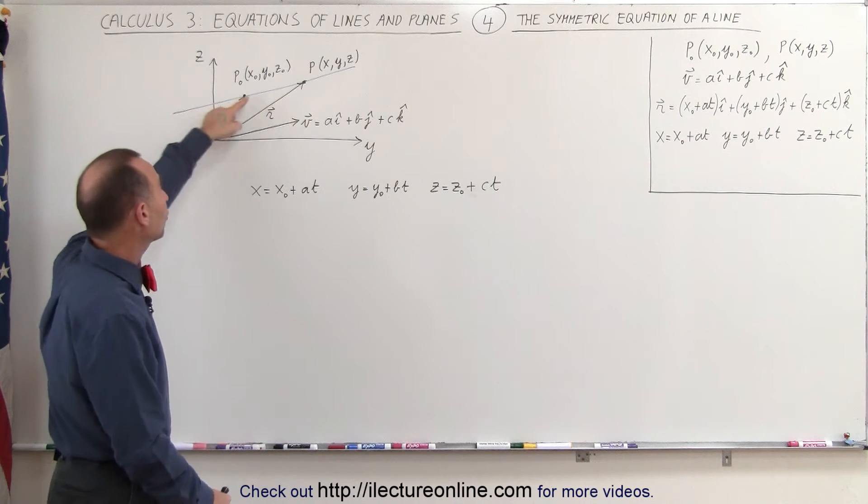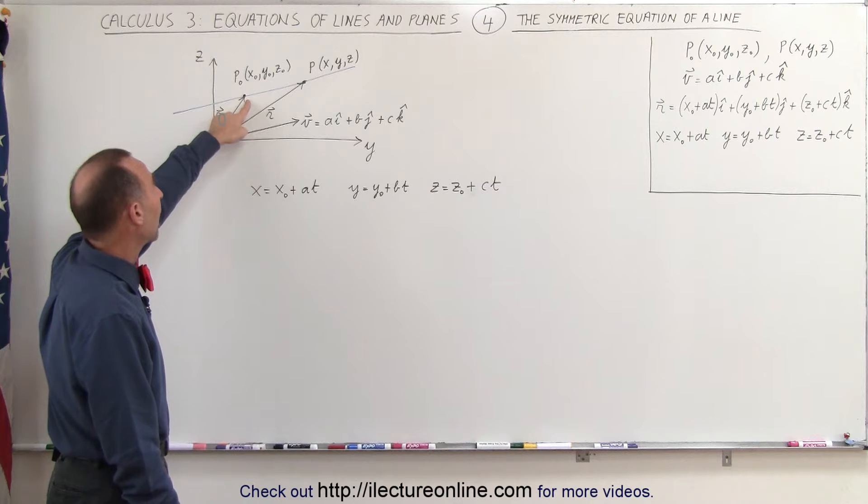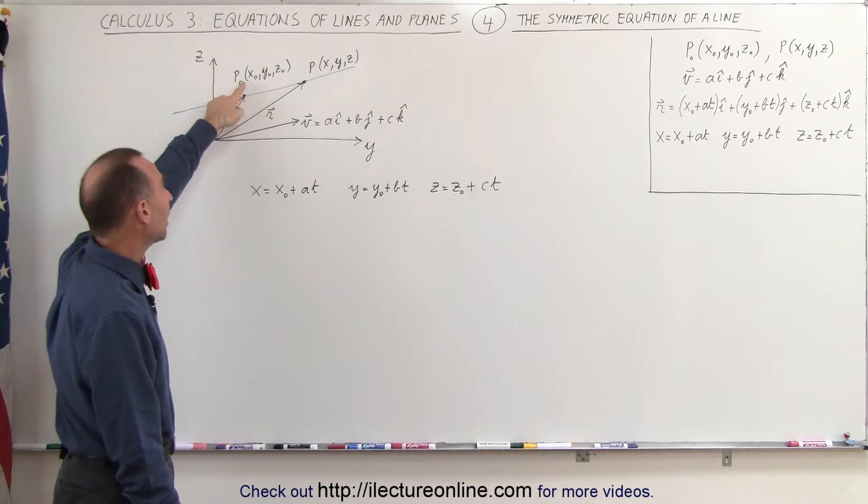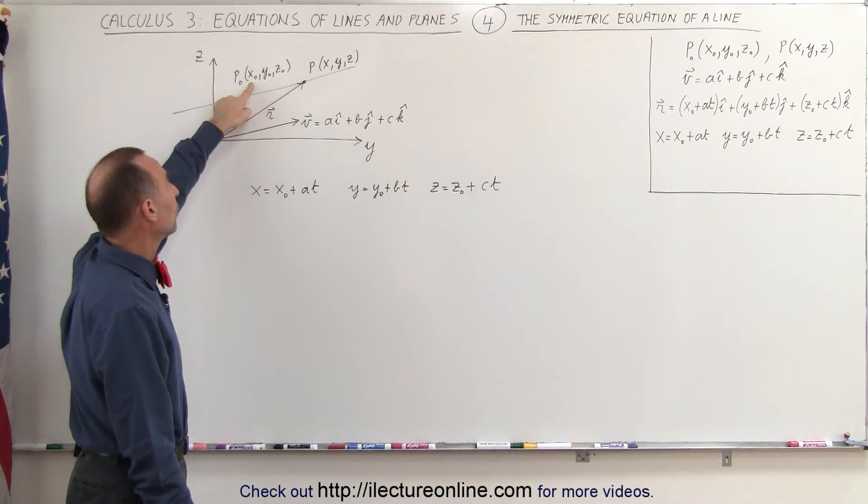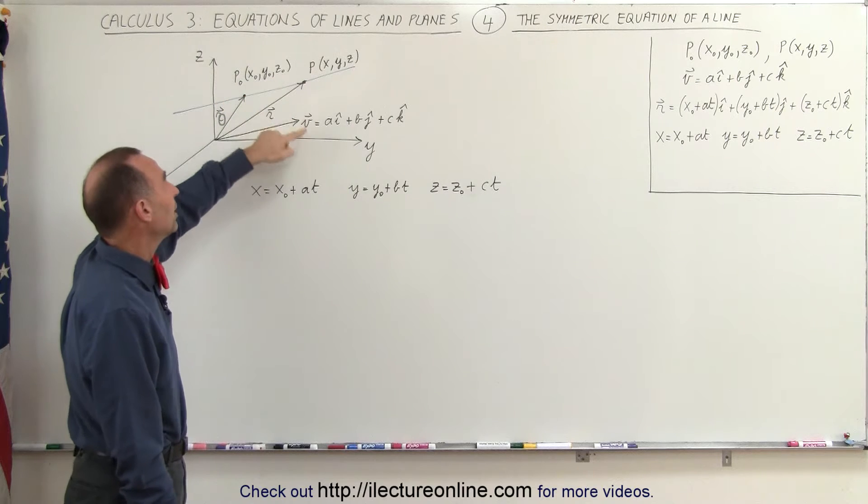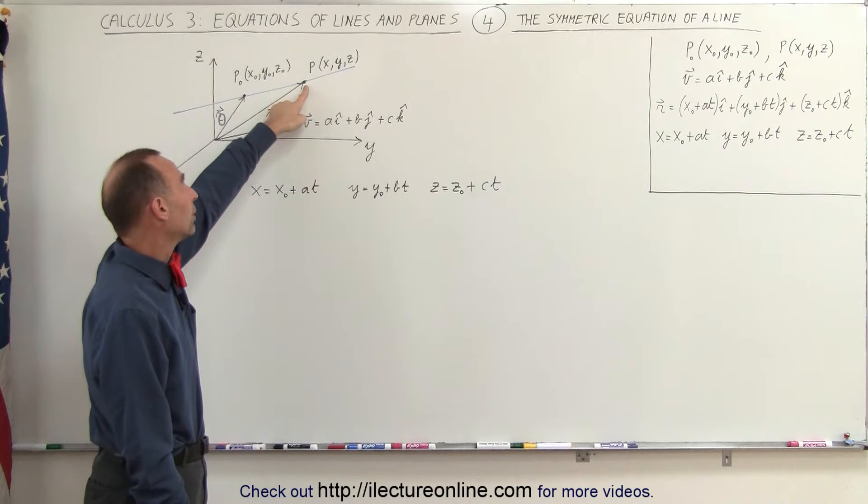Again we have a line in space, we have a known point on the line which is known as p sub naught, has the known coordinates for x, y, and z. We pick any arbitrary point on the line.